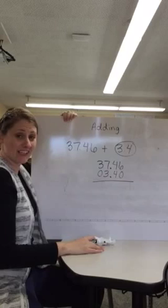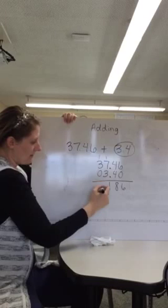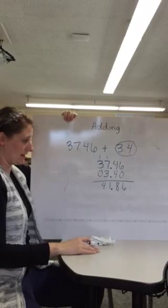Any place where there's a zero or where there's a blank, it's just like there's a zero there. So now I can add 6 plus 0 is 6, 4 plus 4 is 8, 3 plus 7 is 10 plus 1 is 11, and then 0 plus 3 plus 1 is 4. And my decimal stays right where it is.